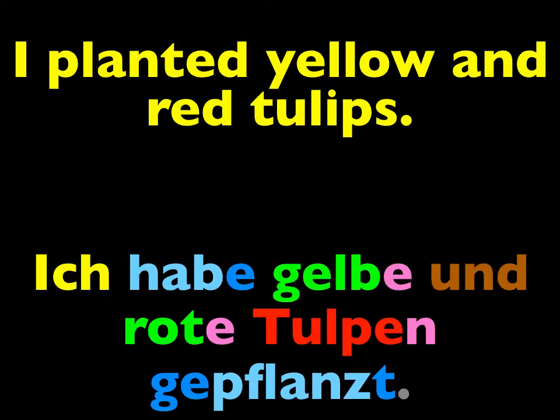Ich habe gelbe und rote Tulpen gepflanzt. Notice that 'gepflanzt', the past participle, is at the end of the sentence where it belongs. And here's something else to notice: Tulpen is, of course, in the plural, and the words 'gelb' and 'rote' — yellow and red — have the adjectival ending 'e'.